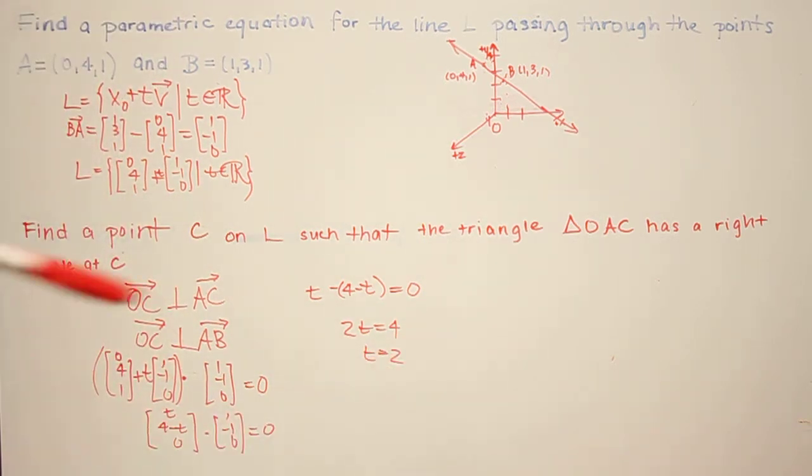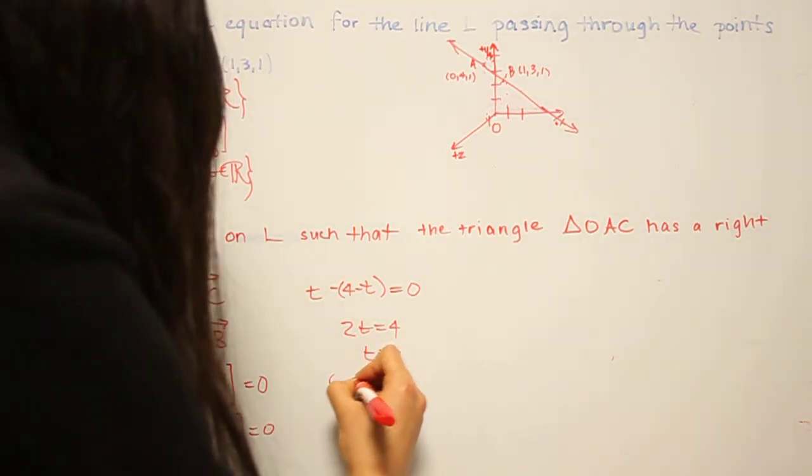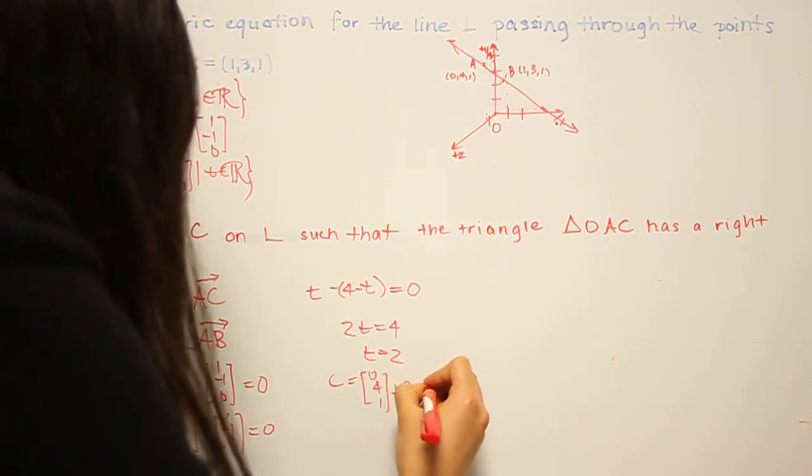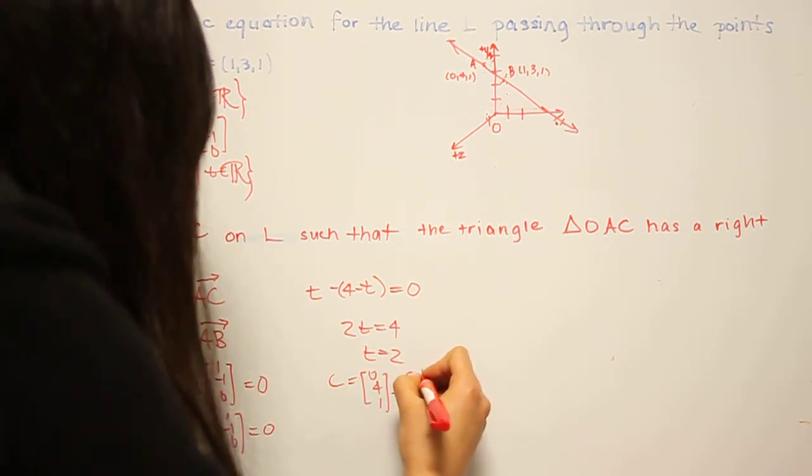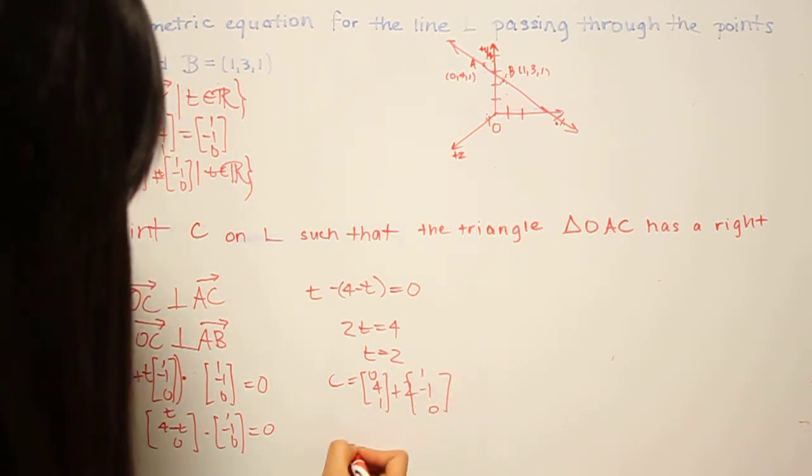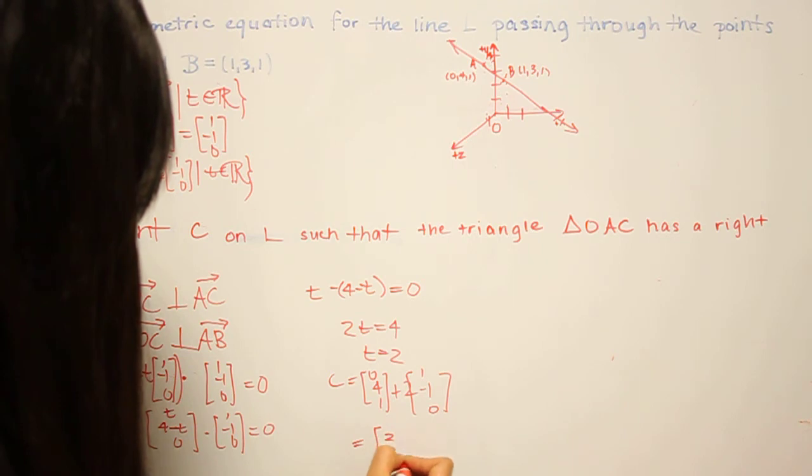So now we can plug this back into the expression that we have for C over here to get C equals (0, 4, 1) plus 2 times (1, -1, 0), which simplifies to (2, 2, 1).